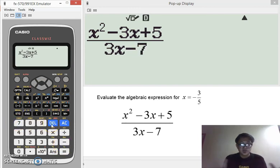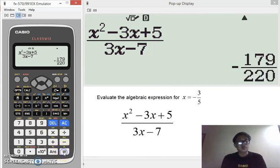And to evaluate the expression, we know that negative 3 over 5 is now assigned to x. The expression will now be evaluated for that value and you will get negative 179 over 220. Obviously, the same as what we got with doing the tedious calculation before.